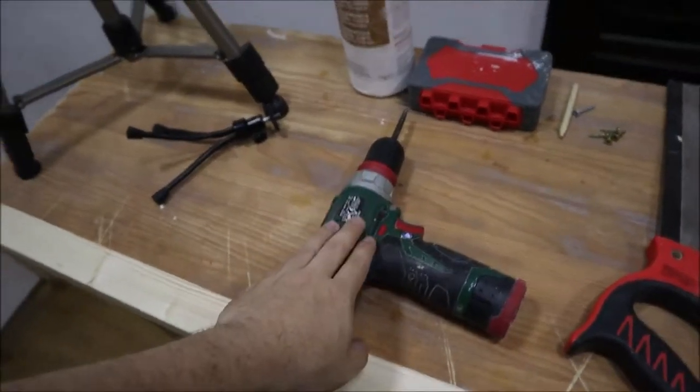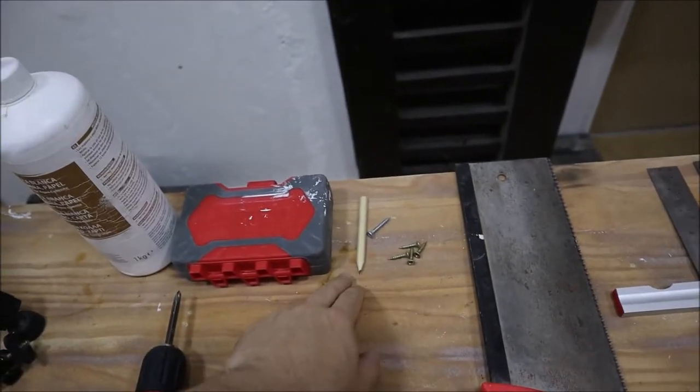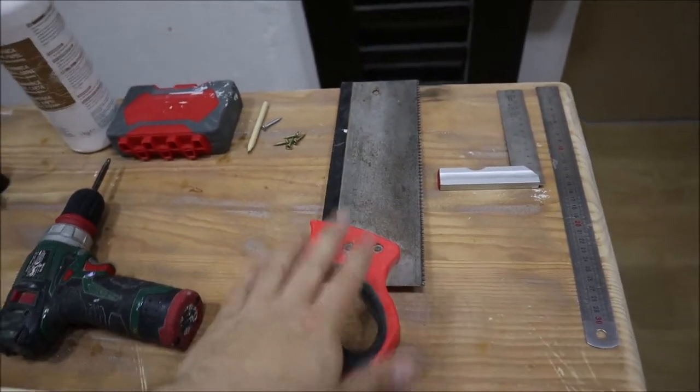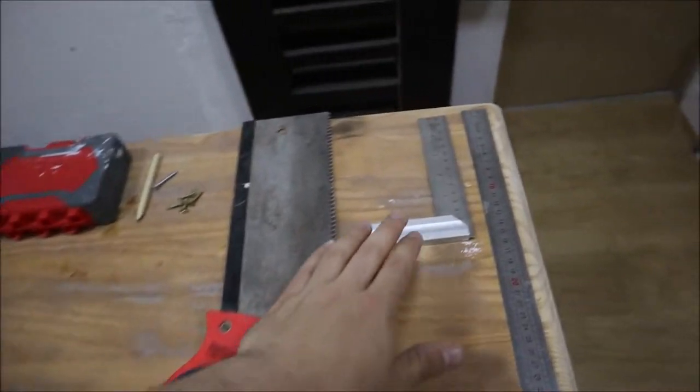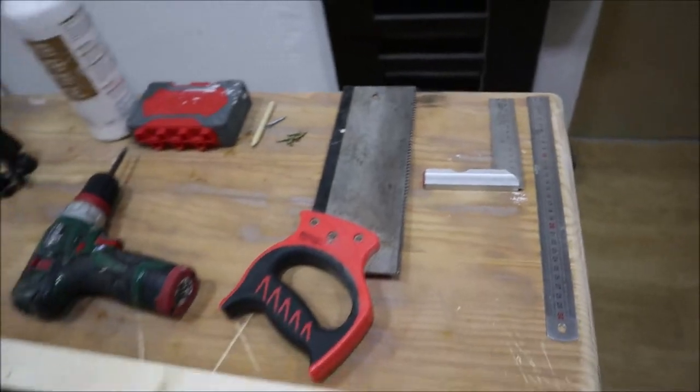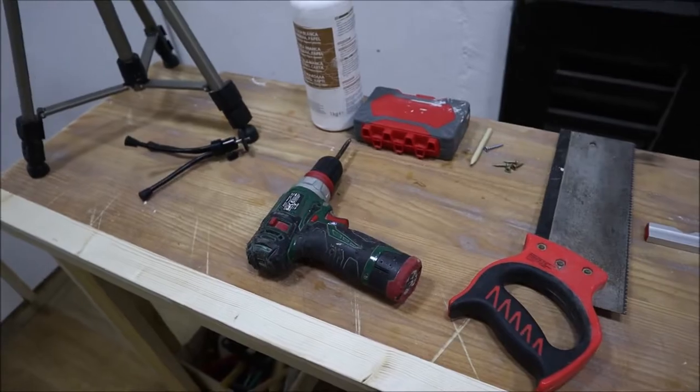You're going to need a drill, some wood glue, some drill bits, screws and a pencil. You're going to need a hand saw because I'm not using any power tools. And you're going to need a square or a ruler. I think that's pretty much everything. There's a few other pieces that I'm going to use but you don't necessarily need to use them.